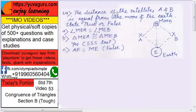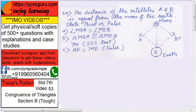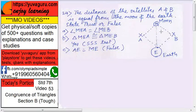The distance of satellites A and B is equal from moon and earth. This is moon, this is earth, this is A, this is B. So the distance is equal, means AM equals to MB, AE equals to BE, and this side is common. So state true or false. MEA equals to MEB.